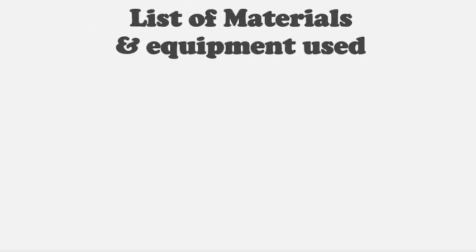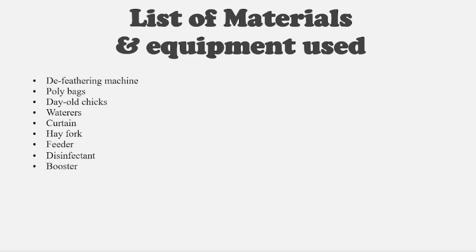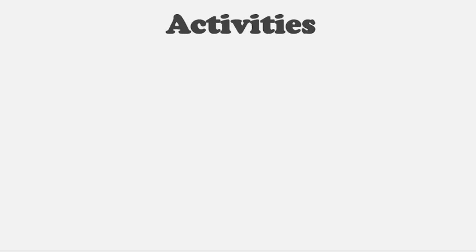The next subheading is the list of materials and equipment. You should list all materials and equipment used from start to finish — the de-feathering machine, poly bags, day-old chicks, waterers, curtains, hay forks, feeders, disinfectant, booster, knife, and wheelbarrow, among many others. I also have a picture of a de-feathering machine in this section.